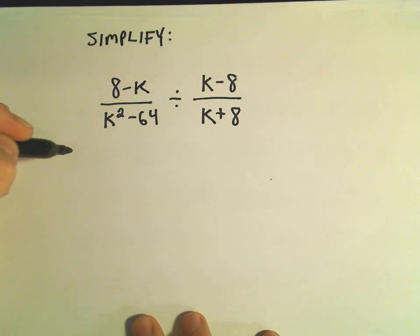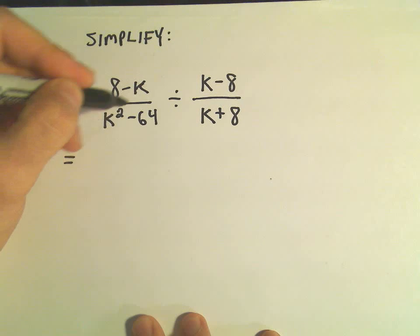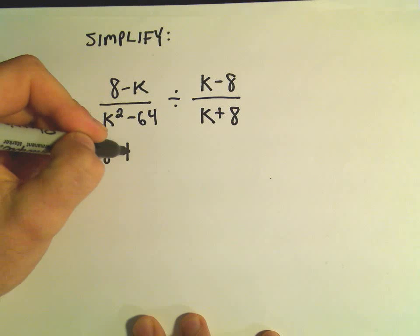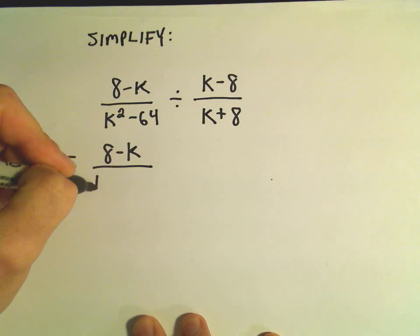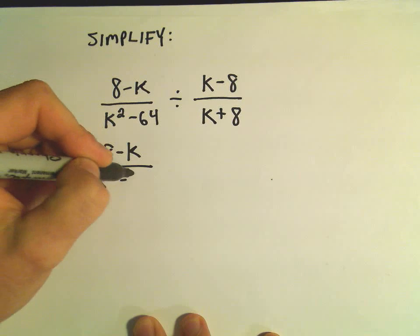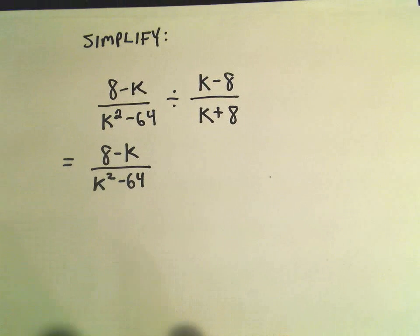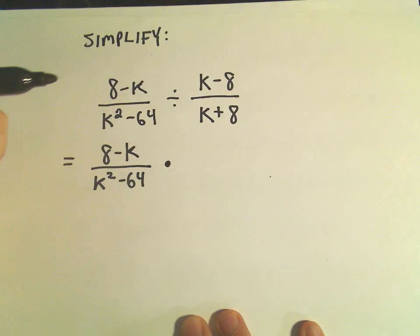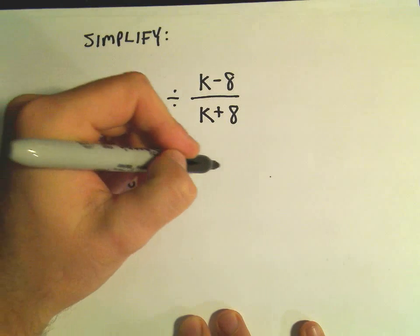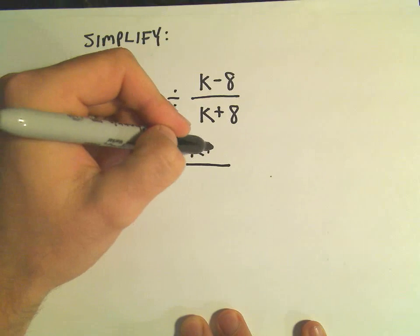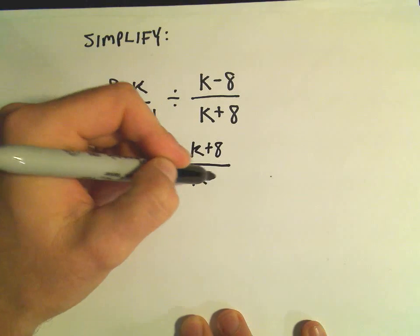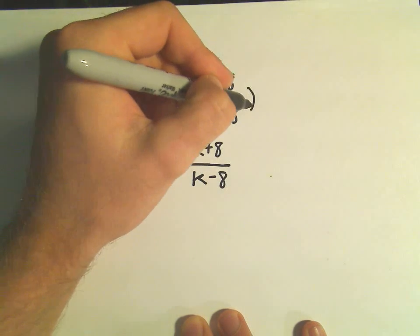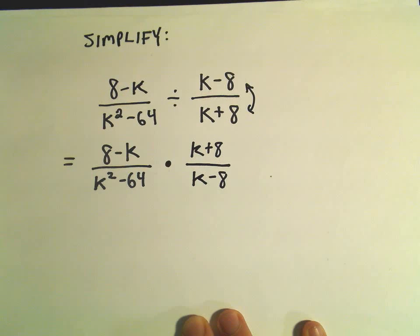The first thing to remember is if you have a fraction divided by a fraction, we leave the first one alone. We turn our division into multiplication and then we flip the other fraction. So division turns into multiplication and the fraction on the right side flip-flops.